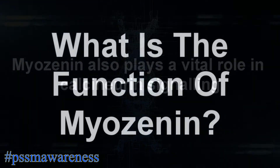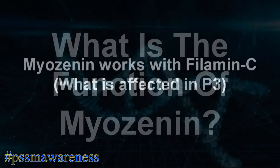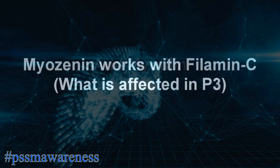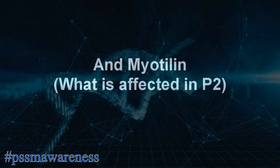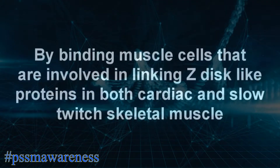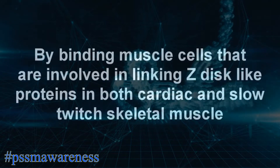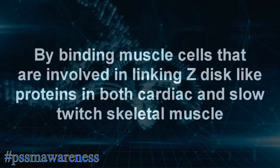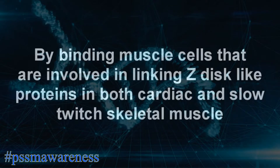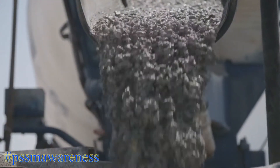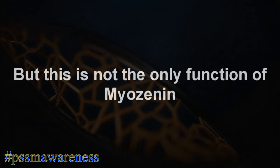What is the function of myozenin? Myozenin works with filamine C, which is what is affected in P3, and myotillin, which is what is affected in P2, by binding muscle cells that are involved in linking Z-disc-like proteins in both cardiac and slow twitch skeletal muscle. So like cement, it helps keep everything in place. But this is not the only function of myozenin.